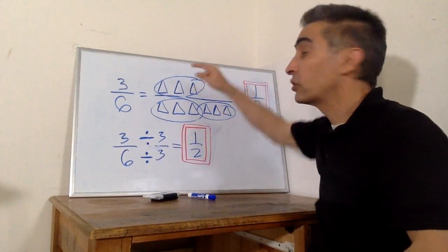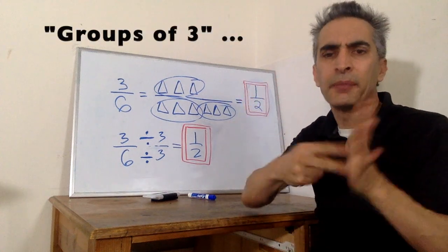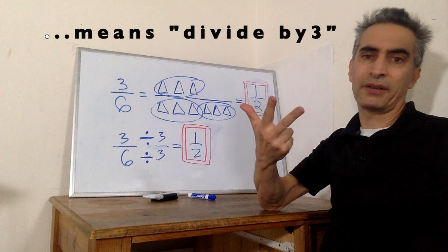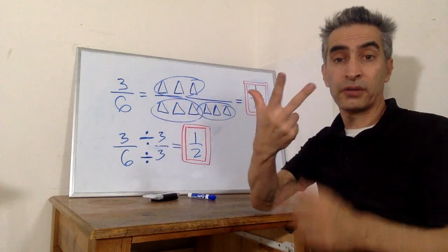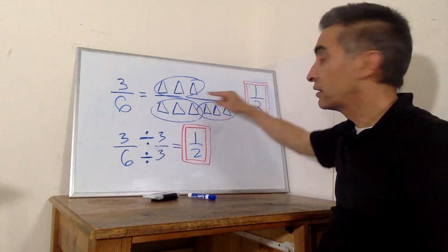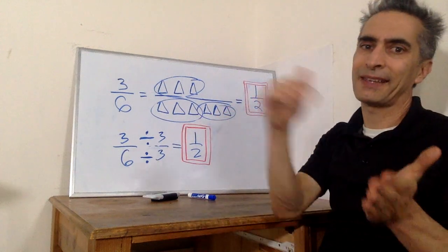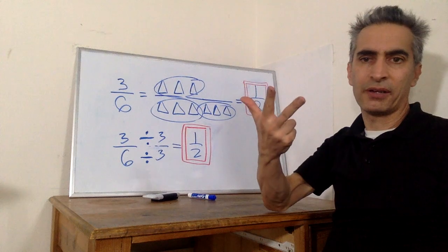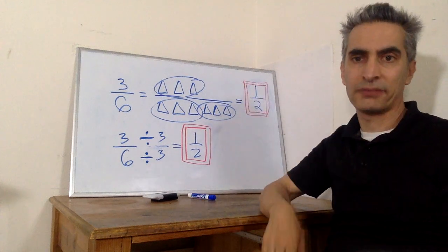You see this group of three in the numerator? That means you're dividing by three. And this group of three in the denominator, and the other group of three? That also means you're dividing by three. You get the same answer either way.